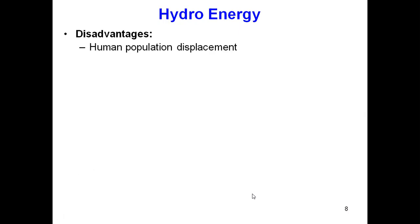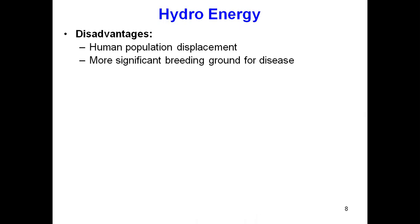Disadvantages of hydro energy: human population displacement — making a dam normally requires a large area, so in many cases human populations are displaced. Stagnant water in the reservoir is a more significant breeding ground for diseases, as microbes and germs grow faster in stagnant water. Additionally, the dam reduces availability of water downstream.